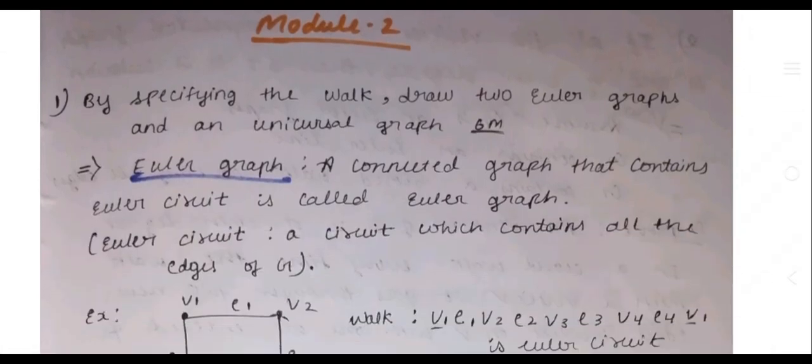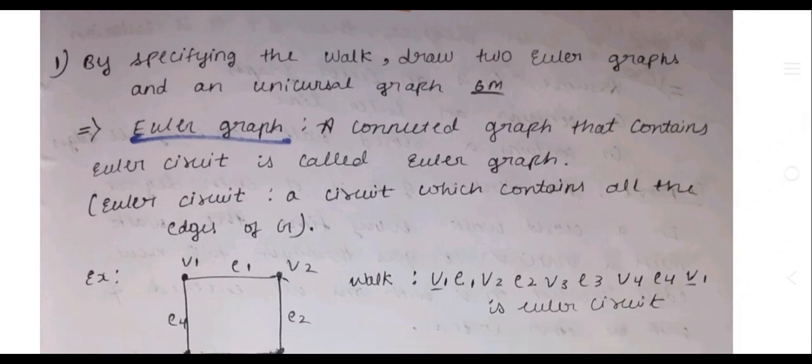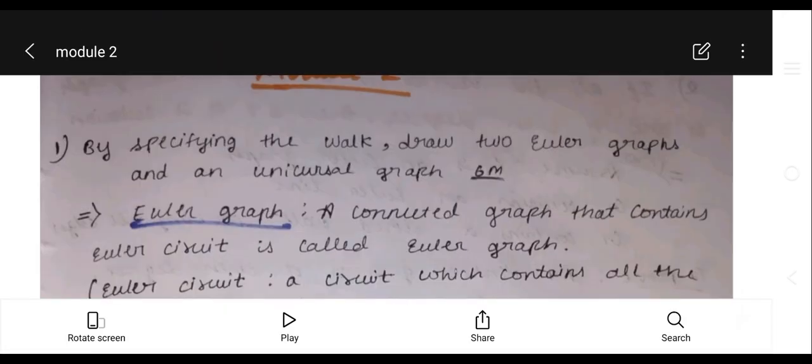Hello guys, welcome back to my YouTube channel. Today we'll discuss Graph Theory Module 2 important questions. Question number one: by specifying the walk, draw two Euler graphs and a unicursal graph. This is for six marks.